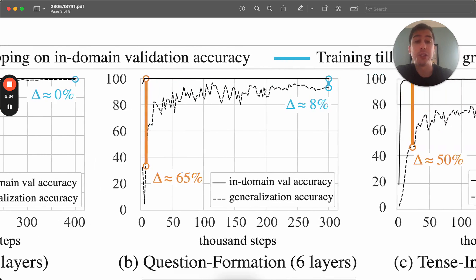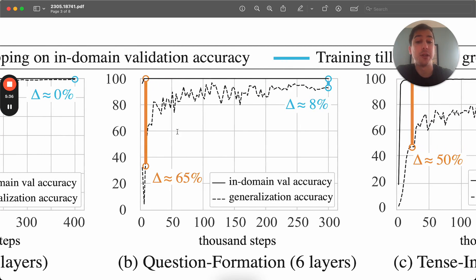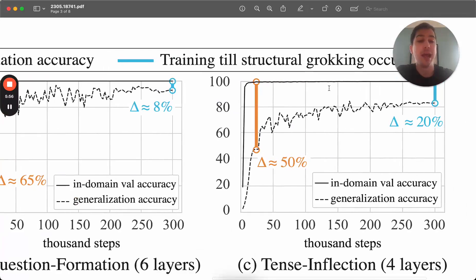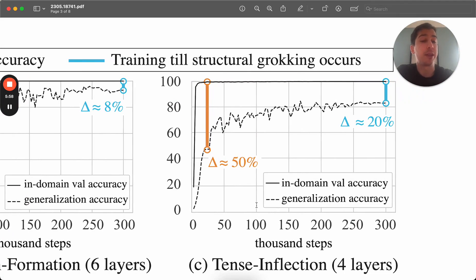And this is even more stark in these other data sets. So when you look at the question formation, you would stop with the generalization accuracy somewhere around 30%, even though validation had reached 100. If you continue training, you can get your generalization accuracy up to almost 90% or 90 plus. And similarly for this tense inflection task, where you would traditionally stop at 50% generalization accuracy. But if you keep going, you will reach something like 80%.